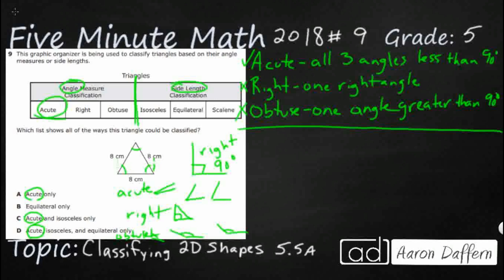So isosceles. Isosceles has two equal side lengths. And so we see this has got eight, eight, and eight. So it does have two. It's got more than two. It's got three.